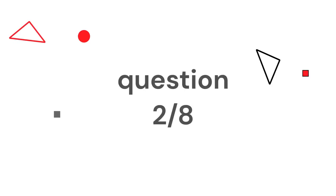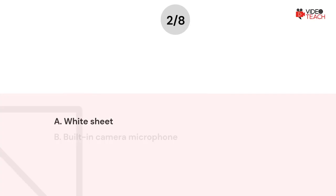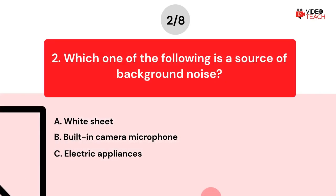Question number two. Which one of the following will provide better sound quality when recording a video with a smartphone? Option A: White sheets. Option B: Built-in camera microphone. Option C: Electric appliances.